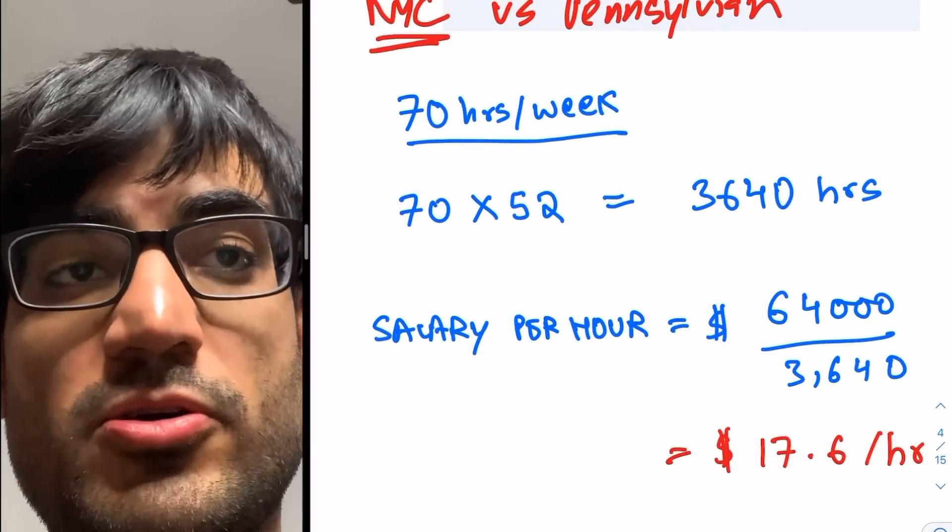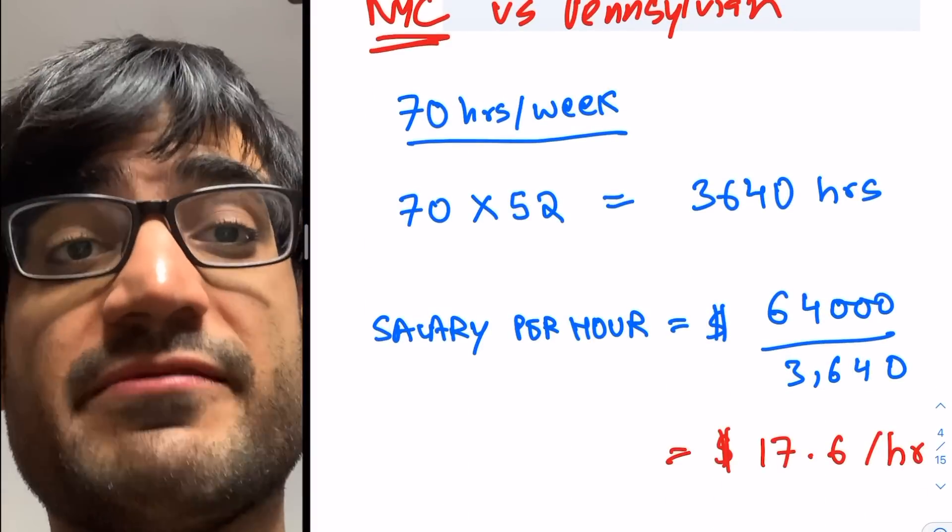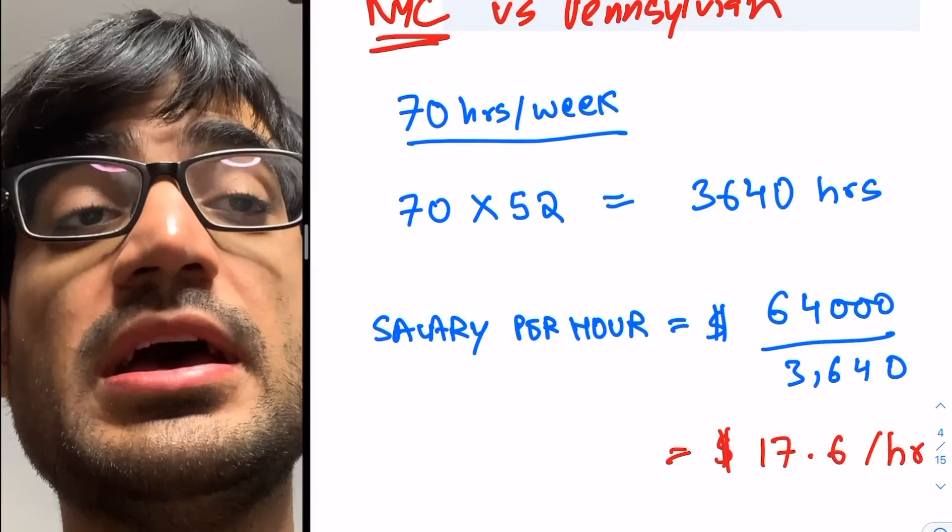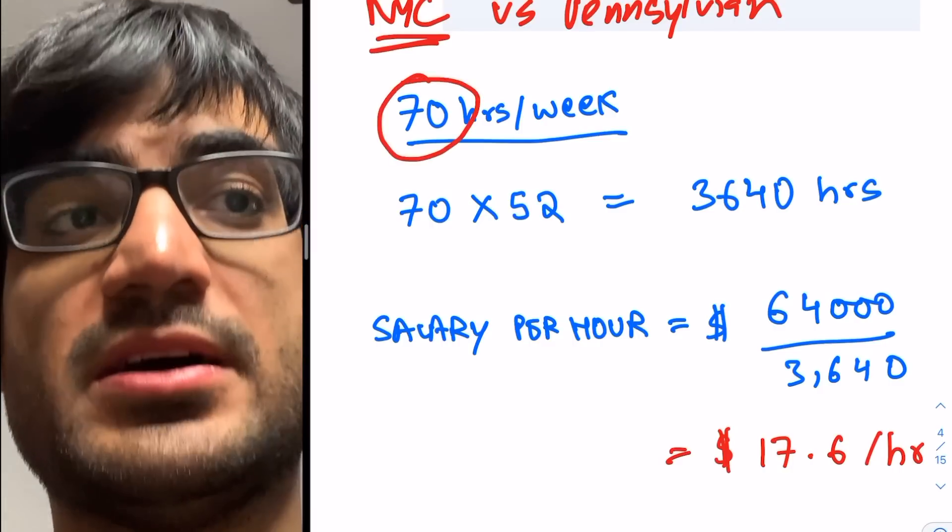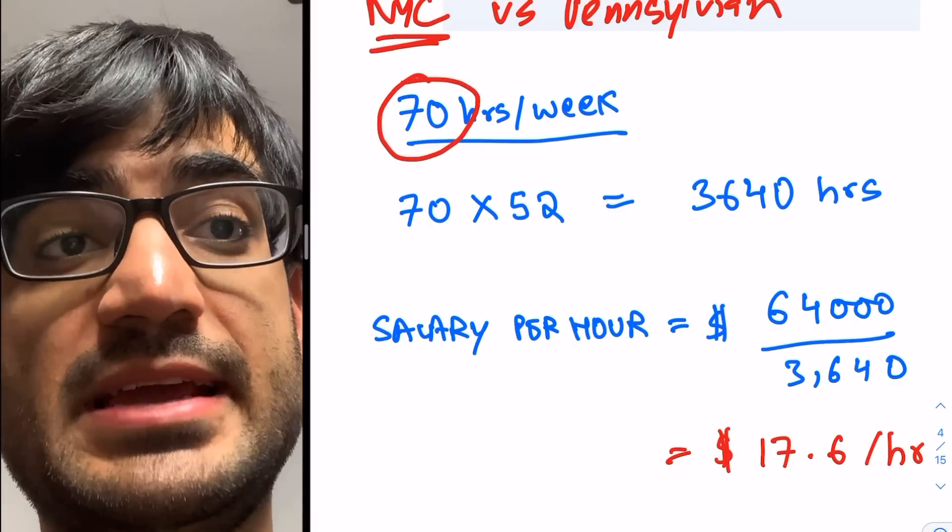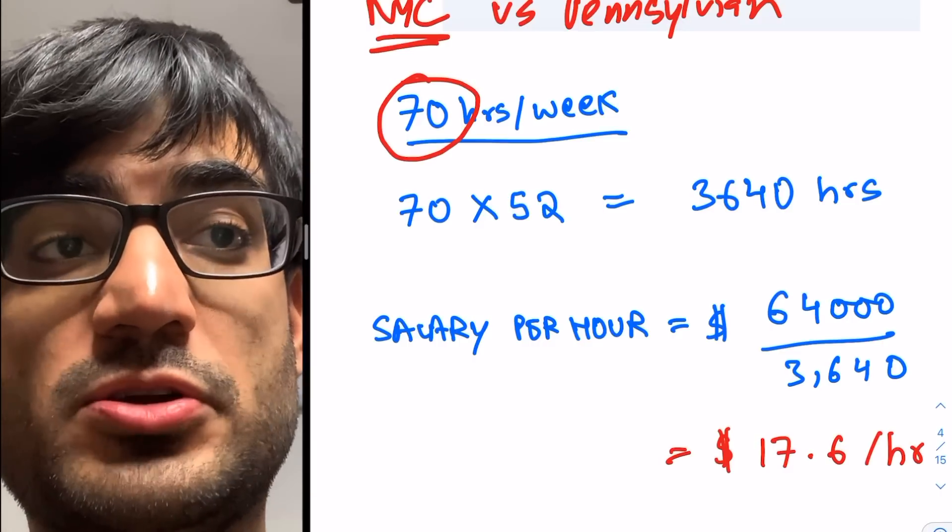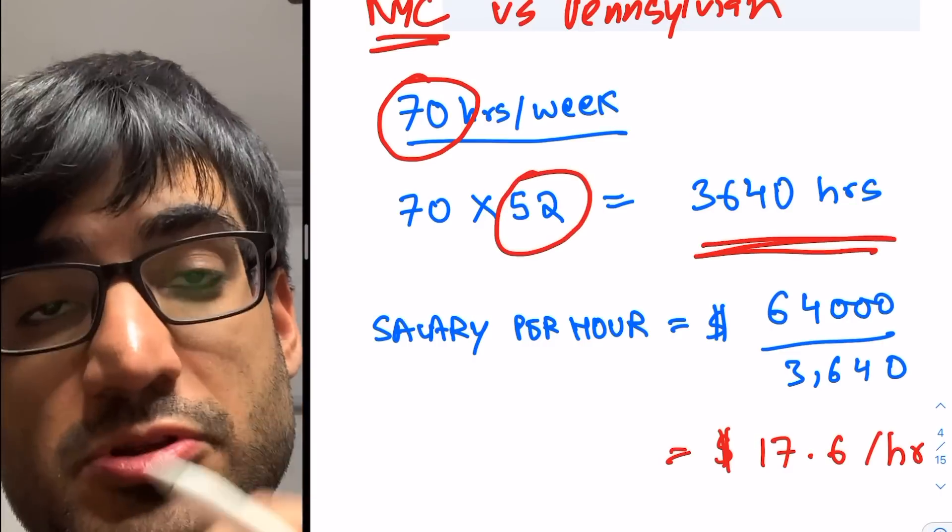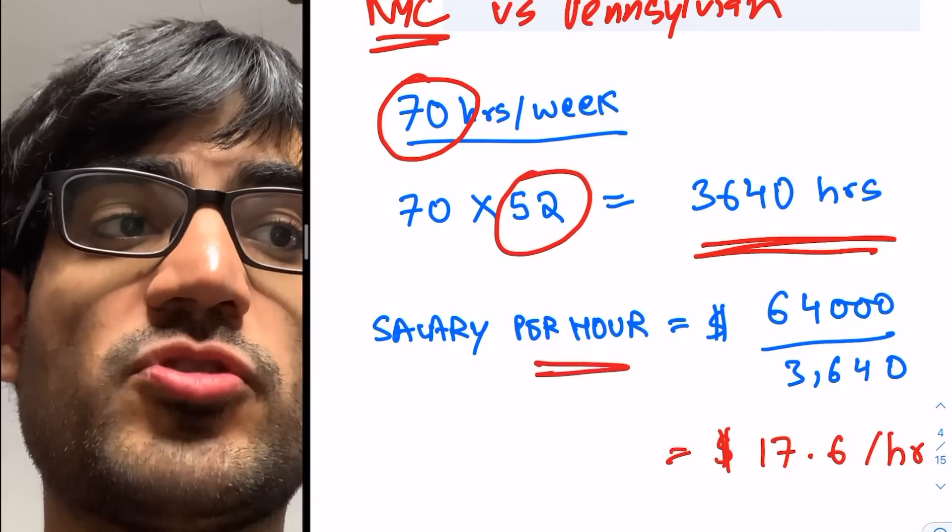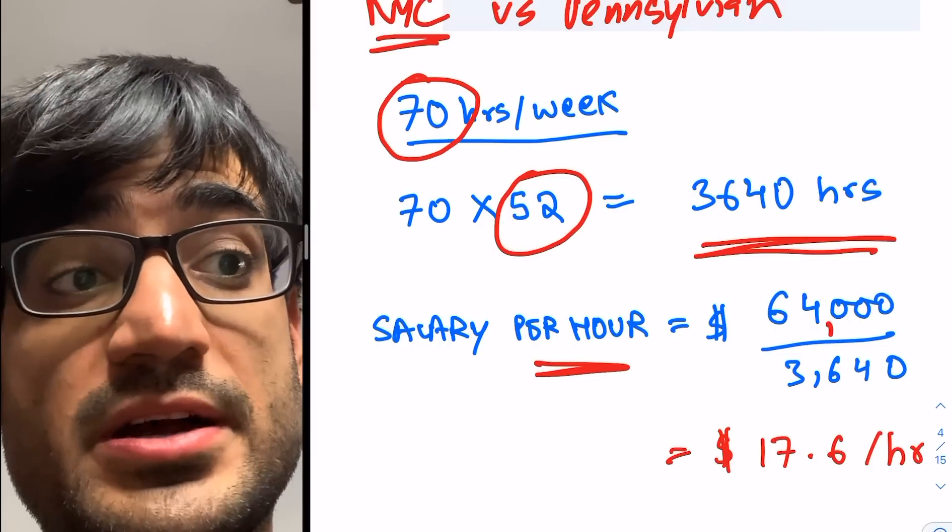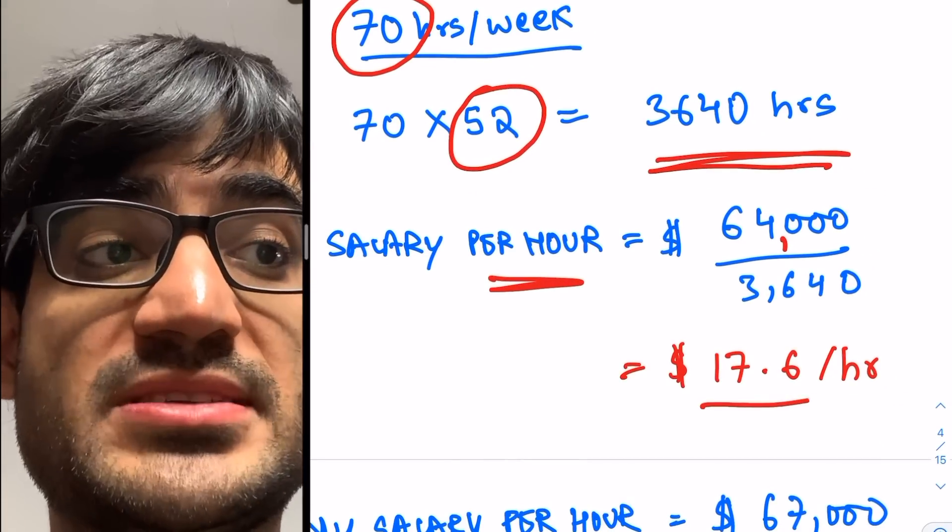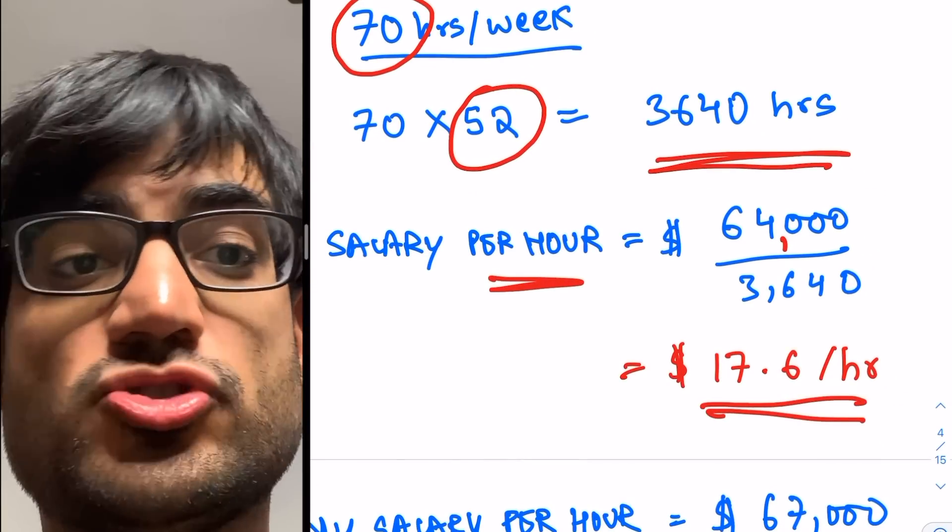So let's talk about salary per hour because that's very important to talk about. Let's say you'll work a maximum of 70 hours a week. So 70 into 52 is about 3640 hours for the whole year. So average salary per hour for a resident would be $64,000 by 3640 hours. So that would be about $17.6 per hour. That's how much wage you'll be paid.